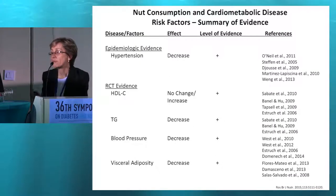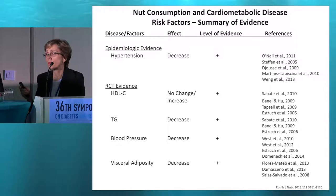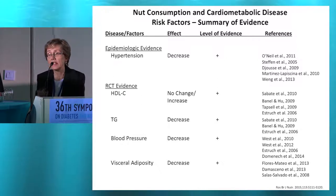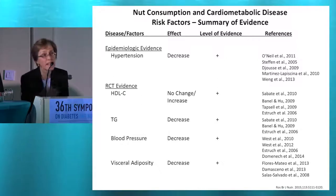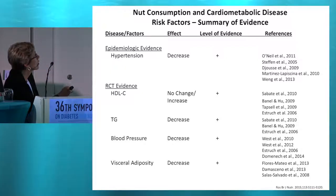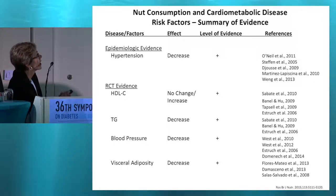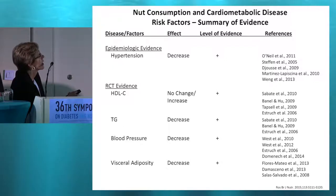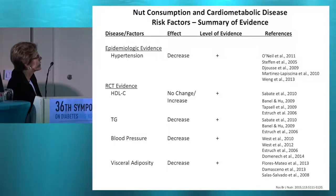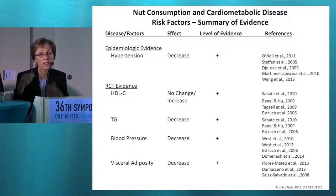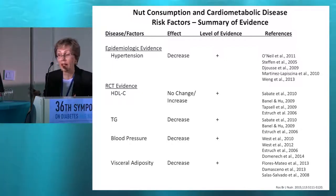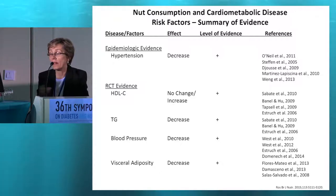Emilio Ross wrote a review paper in British Journal of Nutrition in 2015 looking at epidemiologic and RCT evidence on metabolic syndrome criteria and nut consumption. Focusing on RCT evidence, there are benefits on a lot of metabolic syndrome criteria: HDL cholesterol — an increase or no change; triglycerides — a decrease; blood pressure — a decrease; and visceral adiposity — also a decrease. So there are clear benefits of nut consumption on important criteria for metabolic syndrome.